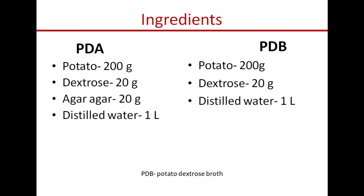The ingredients to make one liter of potato dextrose agar medium are shown on the left hand side: potato 200 gram, dextrose 20 gram, agar agar 20 gram, and distilled water 1 liter. On the right hand side we see another medium - potato dextrose broth.